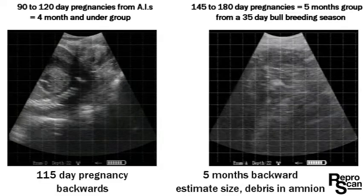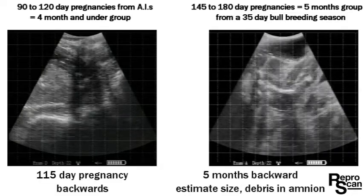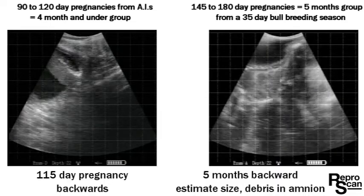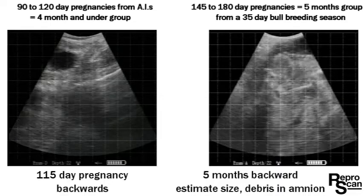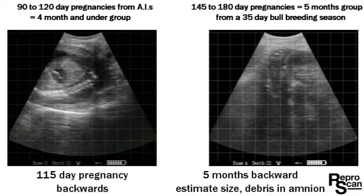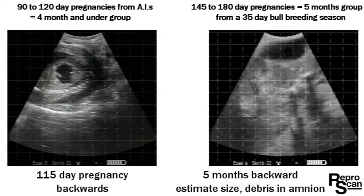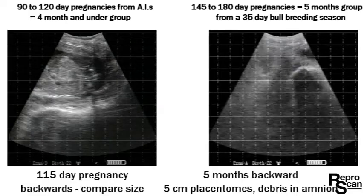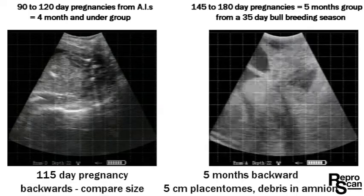There are notes at the bottom. On the left we've got a backwards pregnancy — a 115-dayer — and on the right was a five month that was backwards.